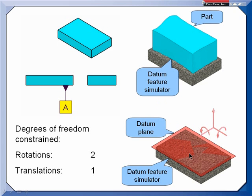Now, a datum plane, if it's primary, constrains three degrees of freedom: one translation, and you can see this part wouldn't be able to move up and down anymore, and two rotations, rotation about two of the axes.